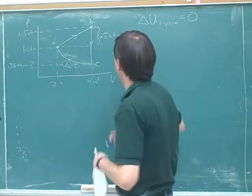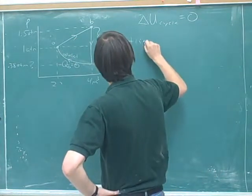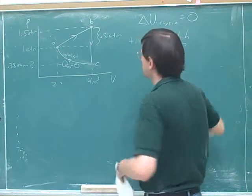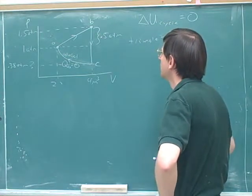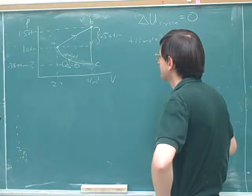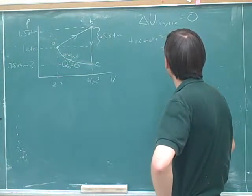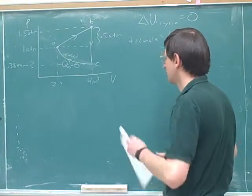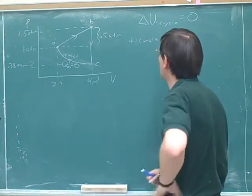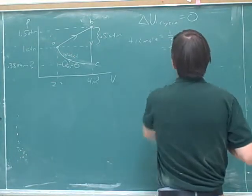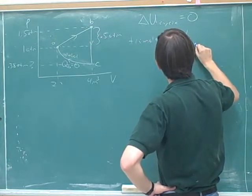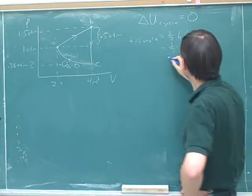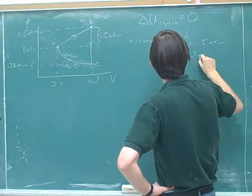Okay, so we'll think of it as a triangle and a rectangle. For the triangle, the area is one half the base times the height. The base is 2, and the height is 0.5 atmospheres. So one half times 2 cubic meters times 0.5 atmospheres - these cancel, and the area of the triangle is 0.5 cubic meter atmospheres.